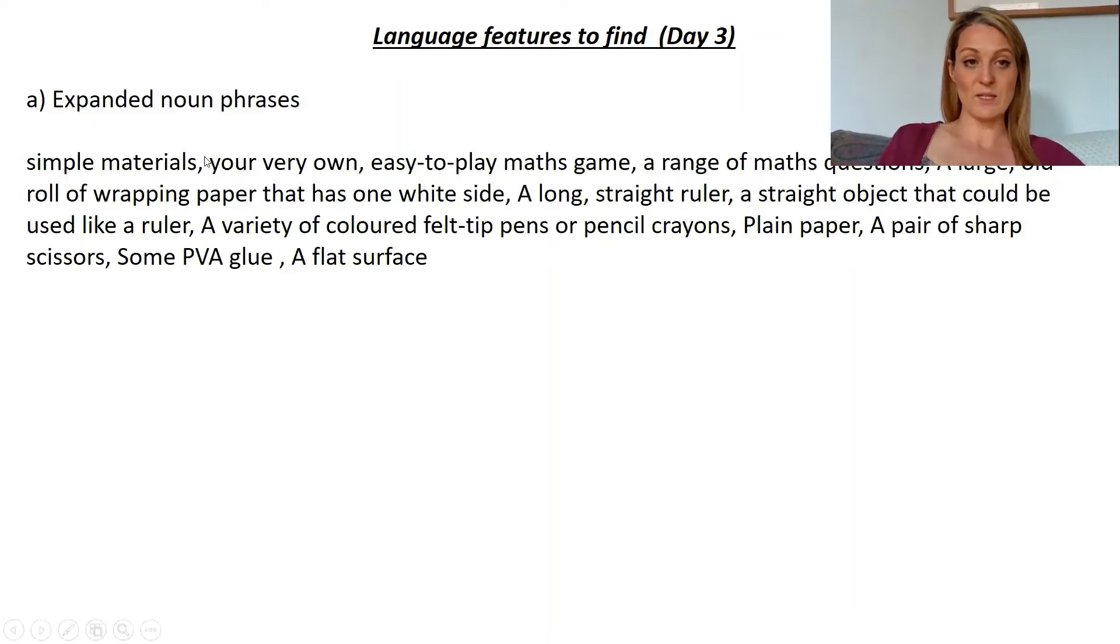So back to this, expanded noun phrases. Here are some you could have found: simple materials, your very own easy to play maths game, maths game being the noun, a range of maths questions. And then the next ones are all from that section that list of equipment that you need. So that's a really good time where you're going to use loads of expanded noun phrases because you want to give lots and lots of specific information about what equipment is needed. So we've got a large old roll of wrapping paper that has one side, a long straight ruler, a straight object that could be used like a ruler, a variety of colored felt tip pens or pencil crayons, and so on.